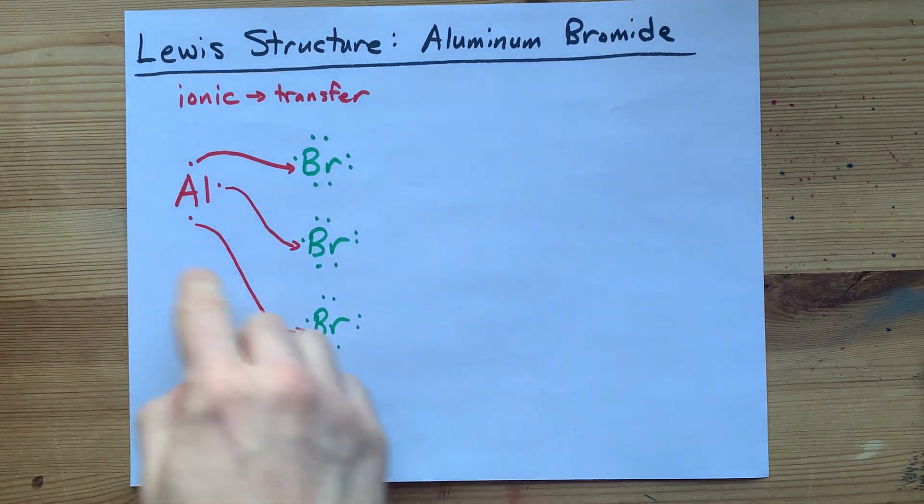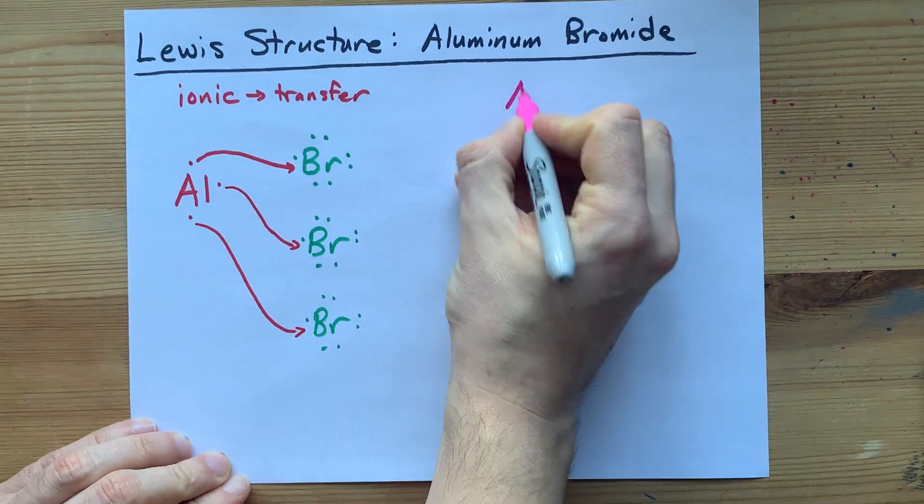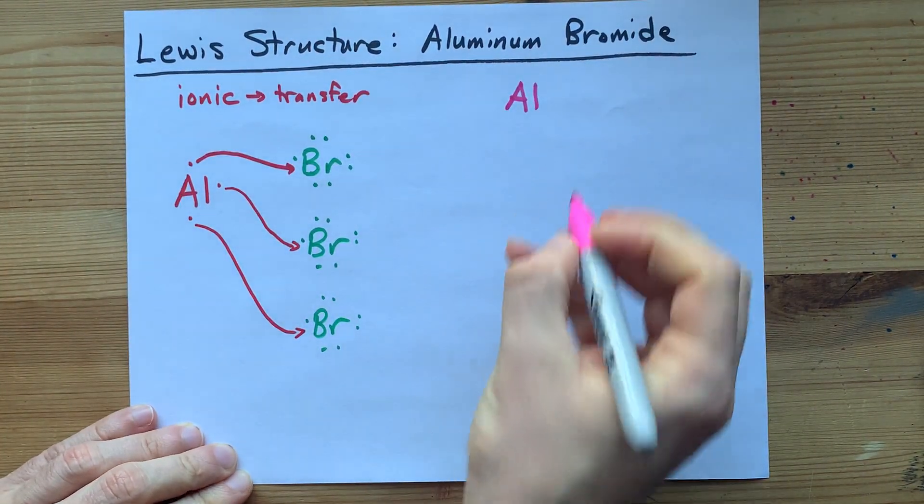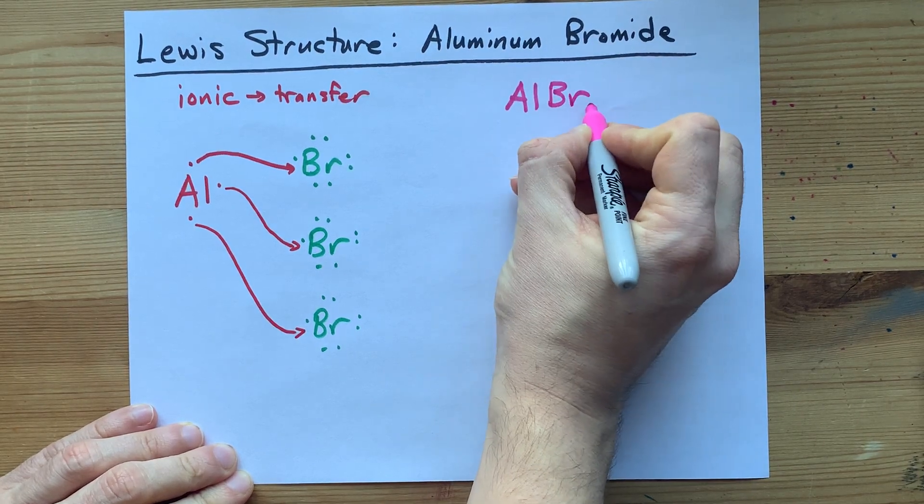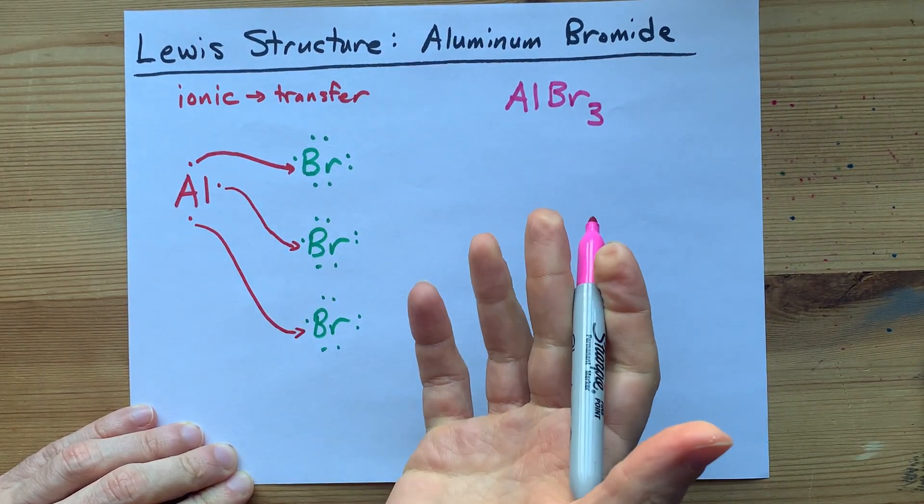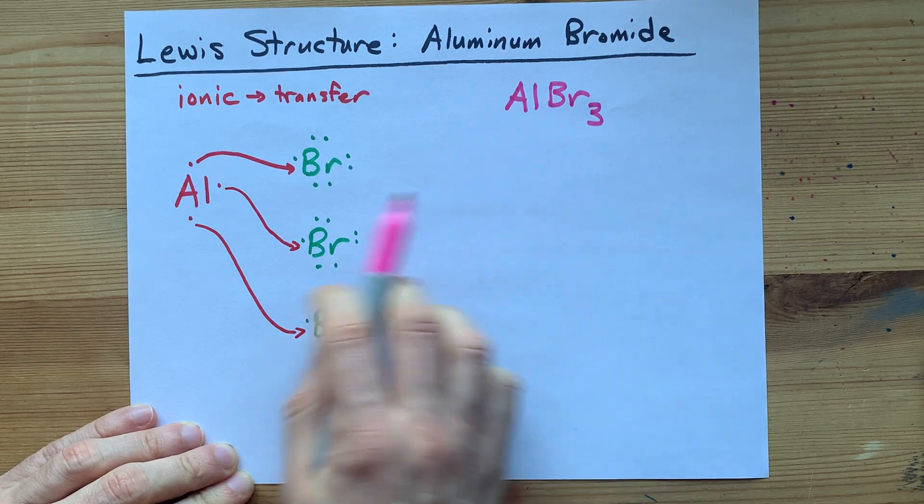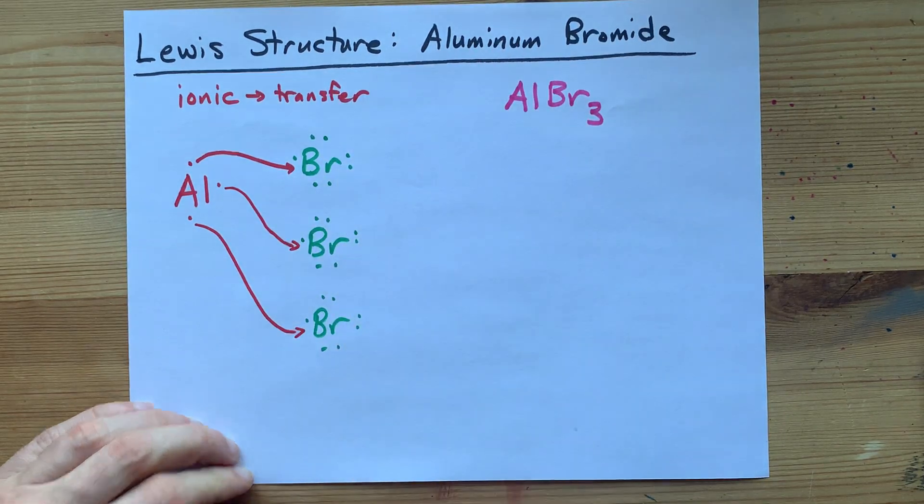Nice. We needed one aluminum to distribute its electrons across 3 bromines, so it's not a surprise that the chemical formula for aluminum bromide is AlBr3.